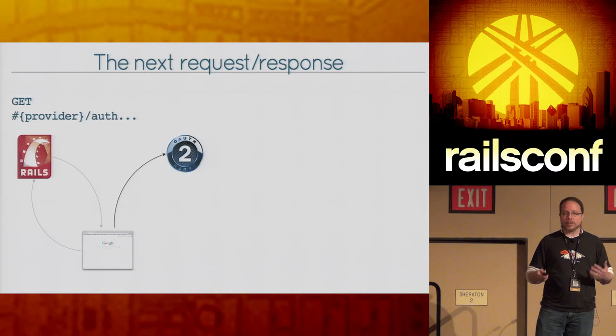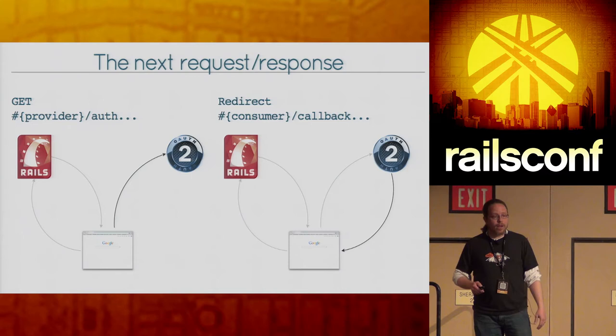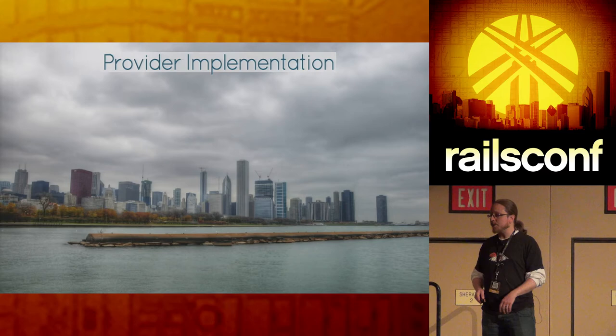Once that's done, OmniAuth handles doing the redirect to where the provider lives, based on what we told it in the strategy about where that provider lives and what endpoints it should hit. Then the provider needs to redirect back to the consumer, so we need to step on to the provider implementation.